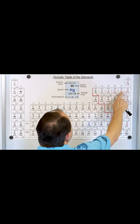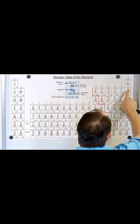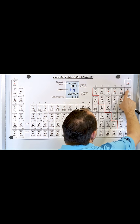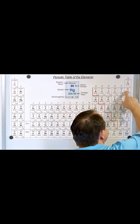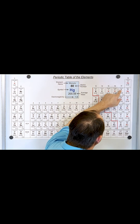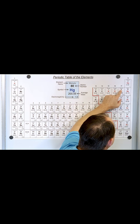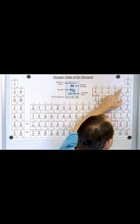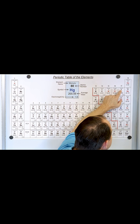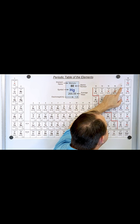Notice that neon, for instance. Neon has 10 protons, and so it must have 10 electrons. So fluorine is right next door — it has nine protons, and so it must have nine electrons.